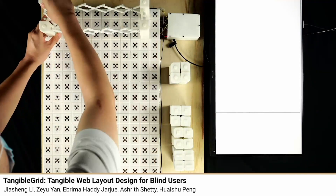A banner reads Tangible Grid: tangible web layout design for blind users. A person places white plastic sensors with accordion-style hinges on top of a patterned grid, and icons appear on a monitor as the sensors are put into place.